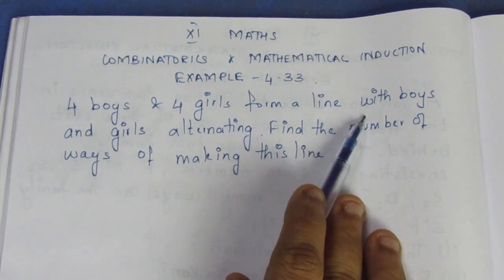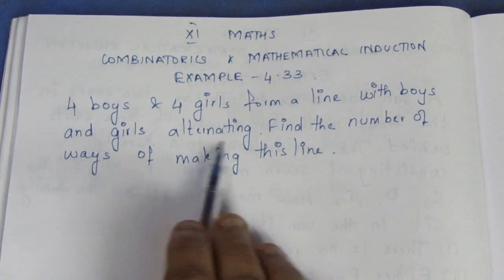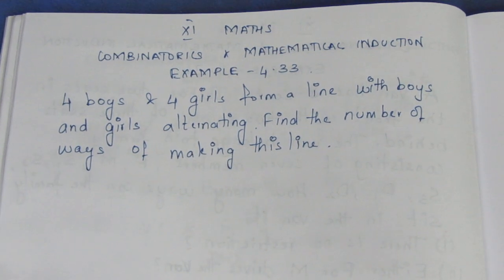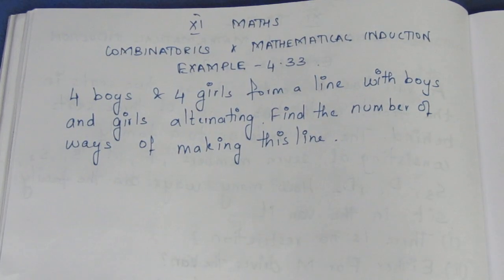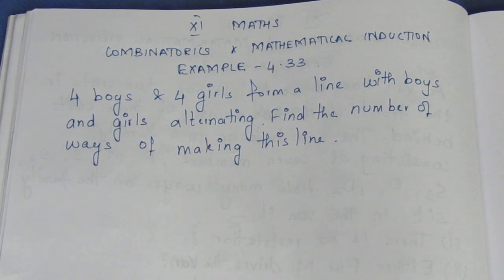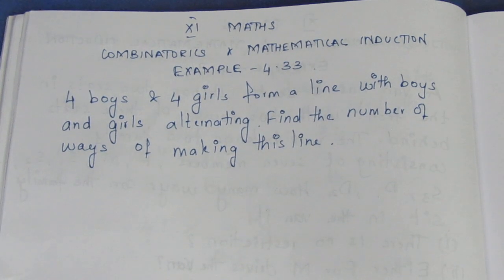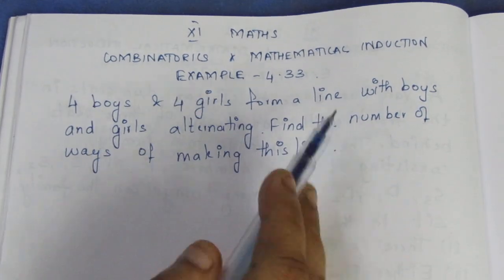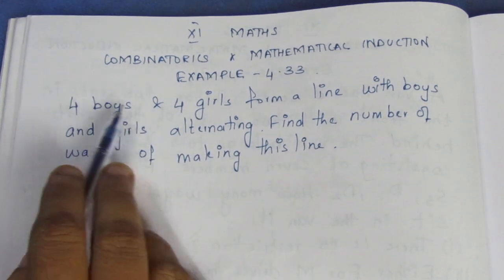So, 4 boys and 4 girls are there. What I'm saying is, there can be alternating arrangements. You are alternating. If you are making this line, you can see how many lines are formed. There are two cases: who can start first? So, if you start with boys, then girls are next to boys, next to girl, next to boy. If you start with girls, then boy, next to girl, next to boy. There are two starting characters.